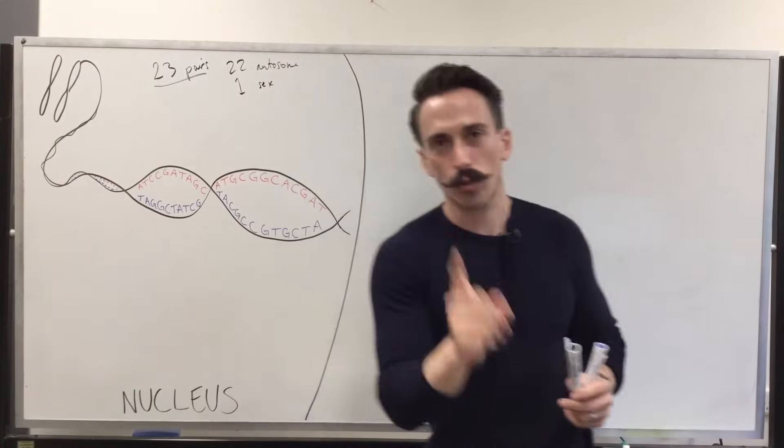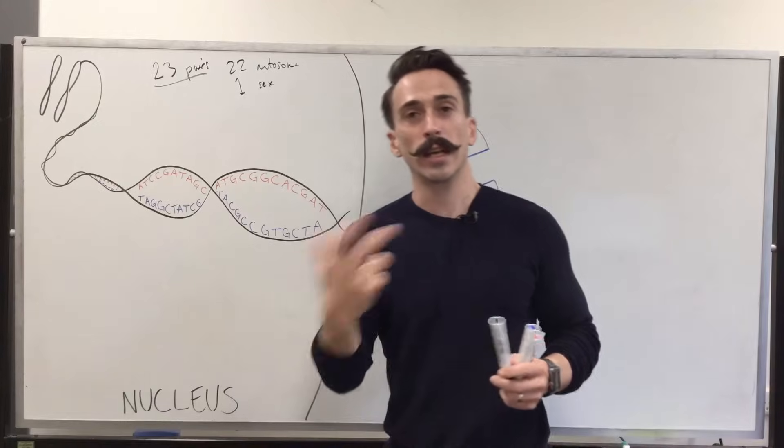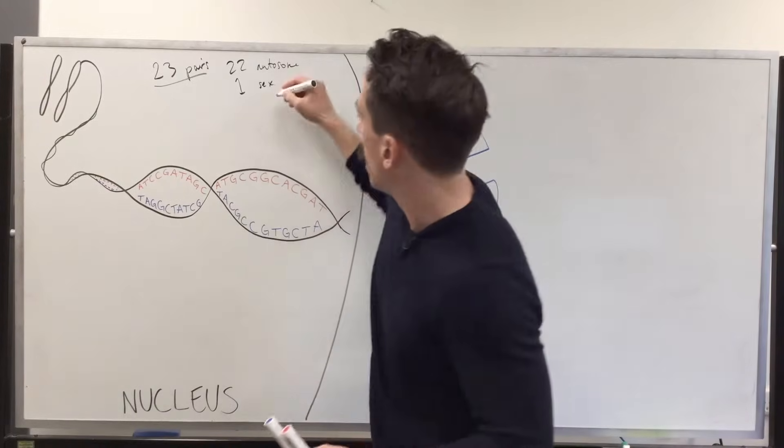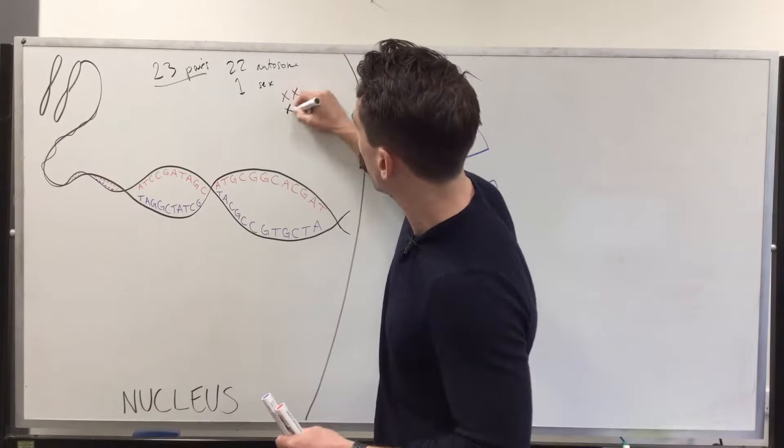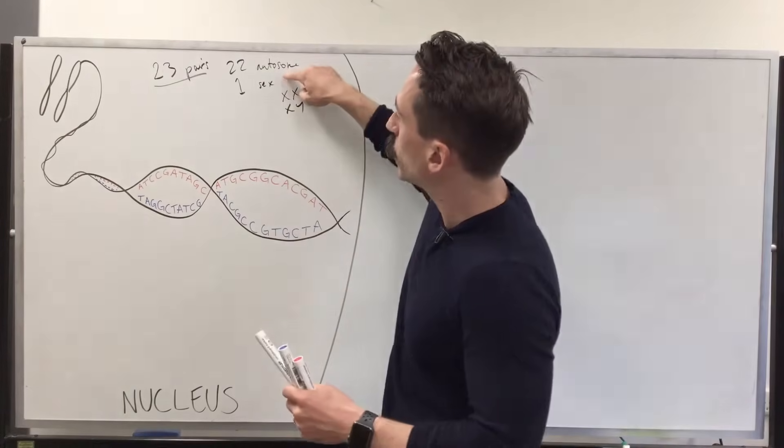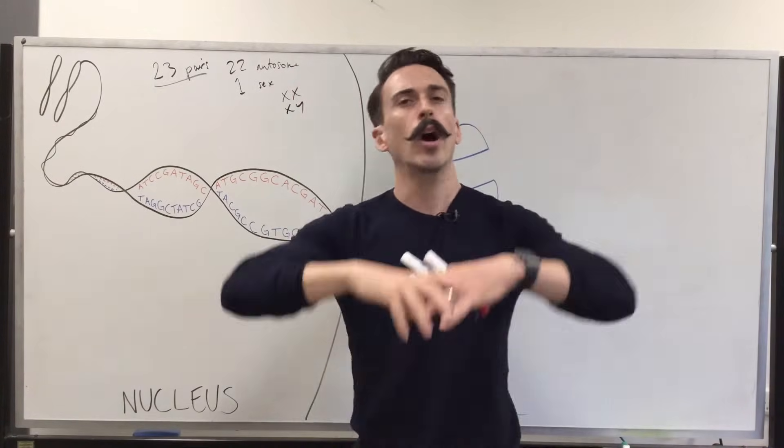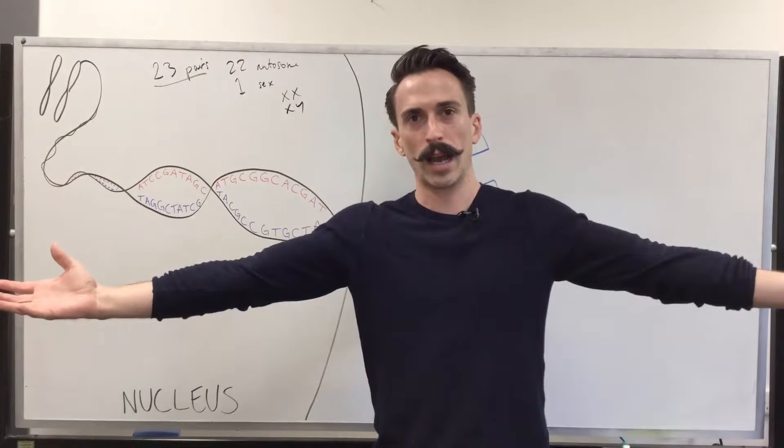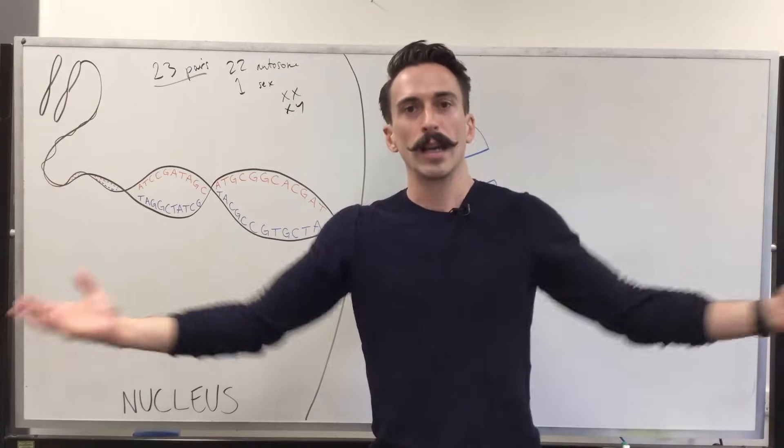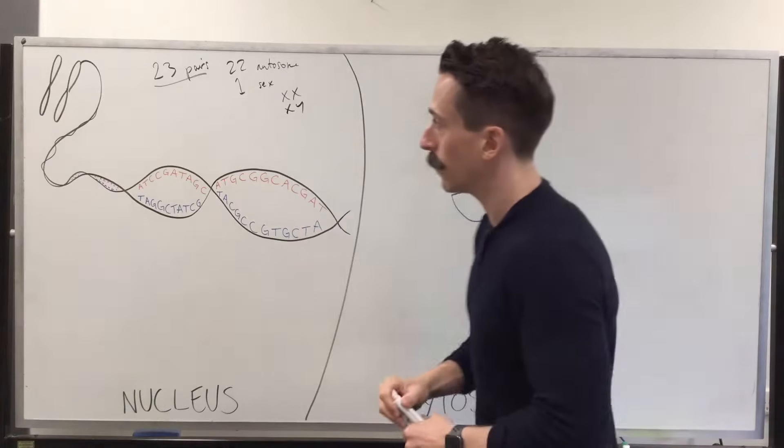When we look at our chromosomes, we have 23 pairs of chromosomes. 22 of these pairs are called autosomes, and then there's one pair that's called our sex chromosomes. Now the one pair of sex chromosomes determines our genetic sex, whether we are male and female. XX determines female, XY determines male. The remaining 22 pairs are going to be there to allow for us to create a whole range of proteins that have functional properties that are very important to your survival and my survival.